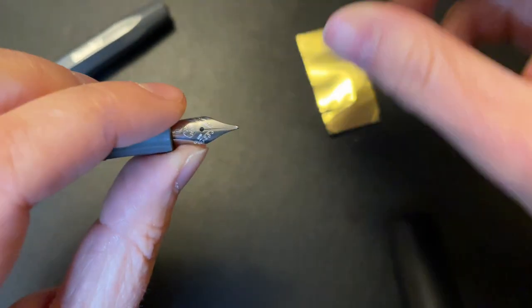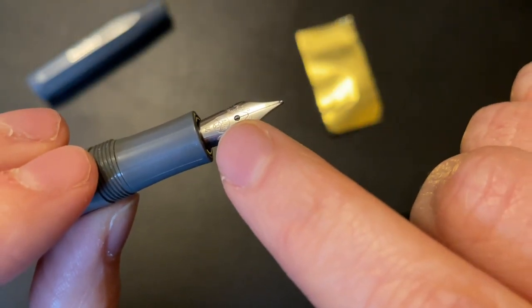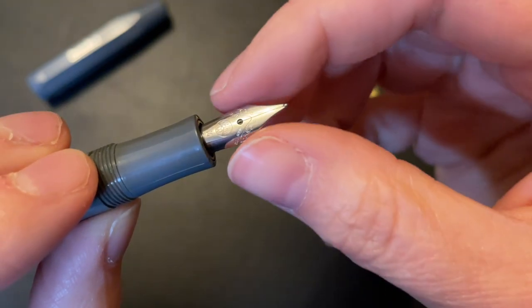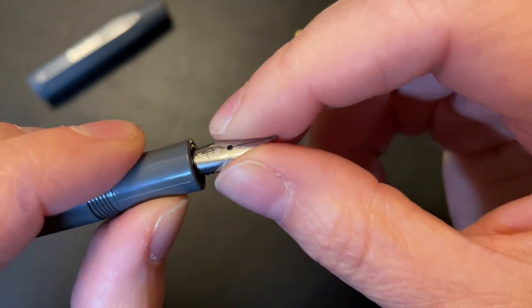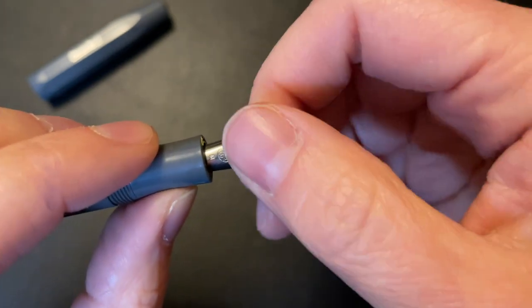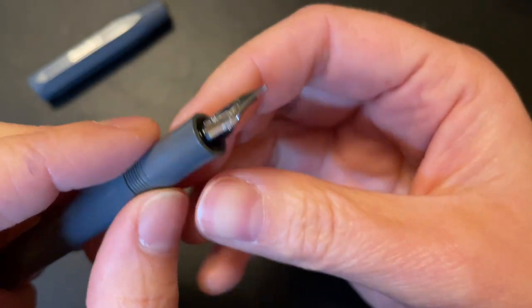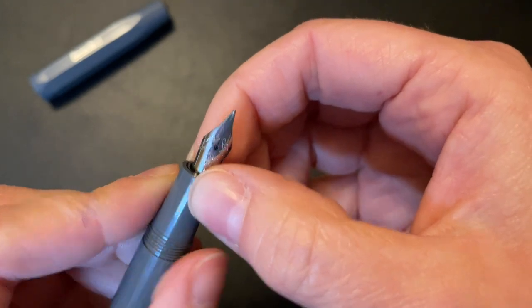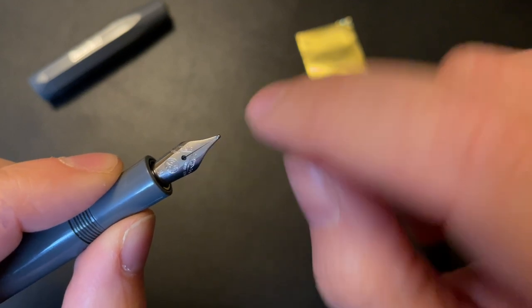Now, when you do that, sometimes you can misalign the slit in the feed to the actual tines itself. So for this Kaweco, it doesn't take much. You just push it over a little bit. It's pretty much already aligned. Worst case scenario, if you've opened up the tines, you can see through it. If you hold the pen up to the light, which I won't be able to show you here, you should be able to see some light in between the two tine slits.